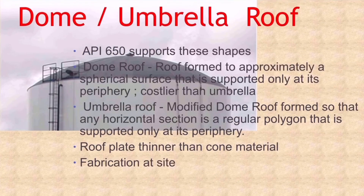Dome or umbrella roof tanks. API 650 supports these shapes of tanks. The dome roof is formed to approximately a spherical surface that is supported only at its periphery and is costlier than the umbrella. The umbrella roof is a kind of modified dome roof formed so that any horizontal section of the roof is a regular polygon that is supported only at the periphery. The roof plate in this type of tank is thinner than the cone material and the fabrication is done generally at site.